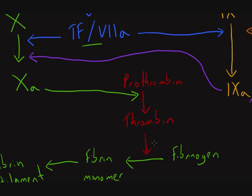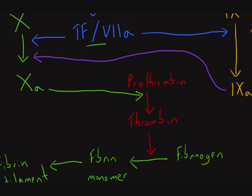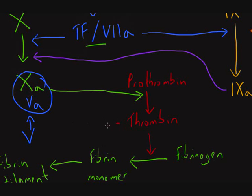Thrombin is now an active enzyme converting fibrinogen into fibrin, and it has a lot of additional effects to positively feed back on the whole coagulation cascade. The first is factor 5: factor 5 gets activated by thrombin and becomes activated factor 5. Activated factor 5 combines with factor 10 over here and increases its enzyme activity, so that the activated factor 10–factor 5 complex is a much more powerful producer of thrombin.